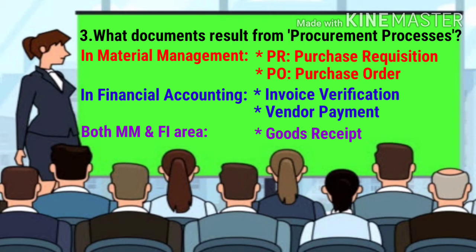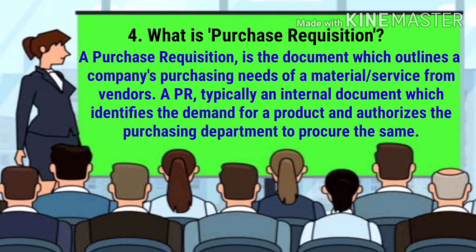The next question is: what documents result from procurement processes? In material management, the first is PR (purchase requisition), then PO (purchase order). In financial accounting, the first is invoice verification and vendor payment. Goods receipt falls under both material management and the FI area.